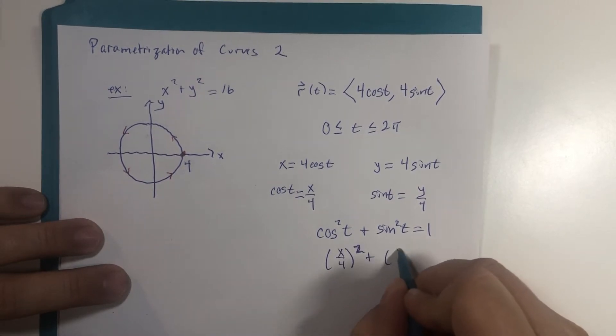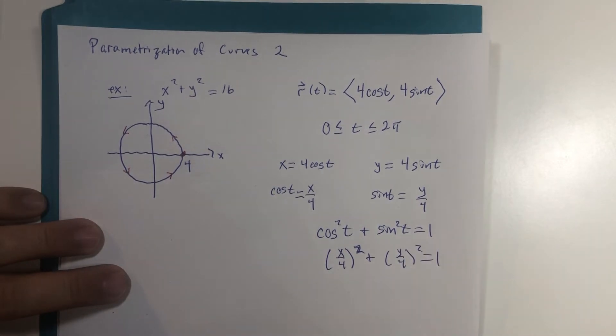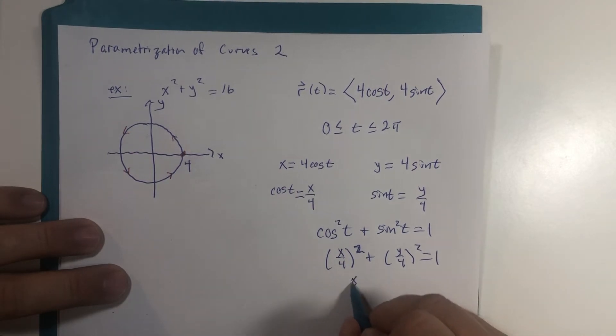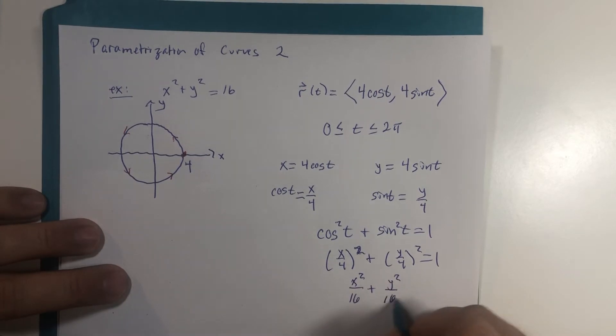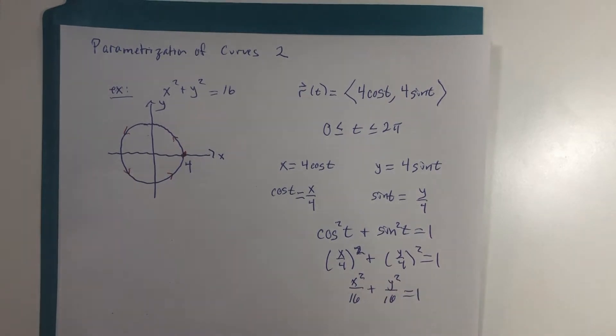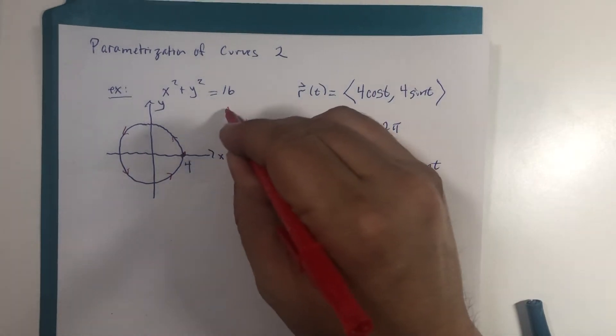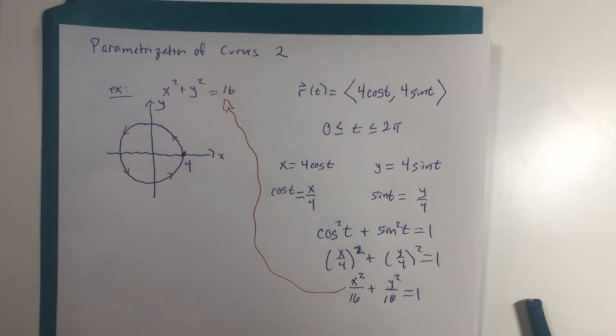So therefore this plus this equals 1 by simple algebraic substitution and we end up with x squared over 16 plus y squared over 16 equals 1 which then is one step away from where we were.